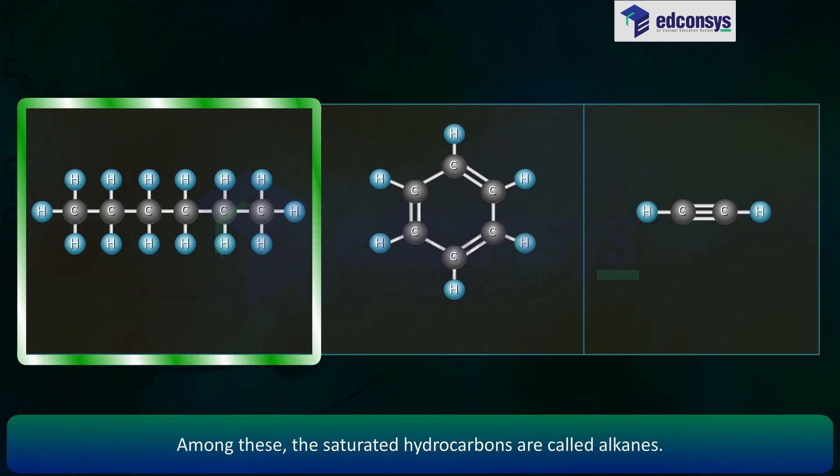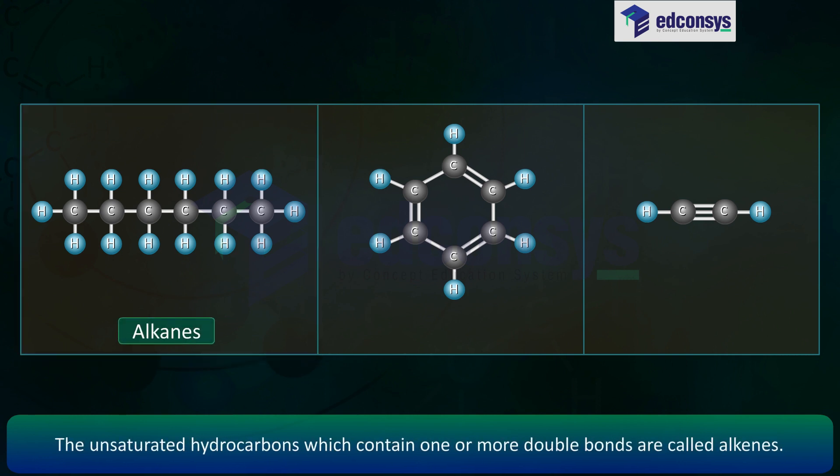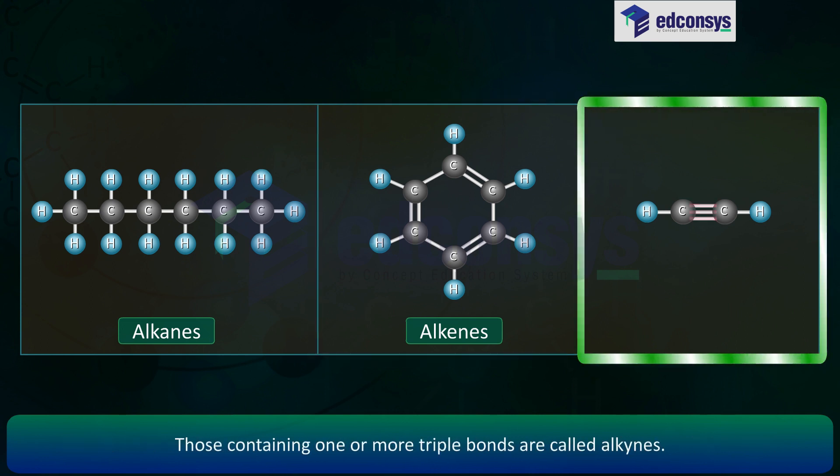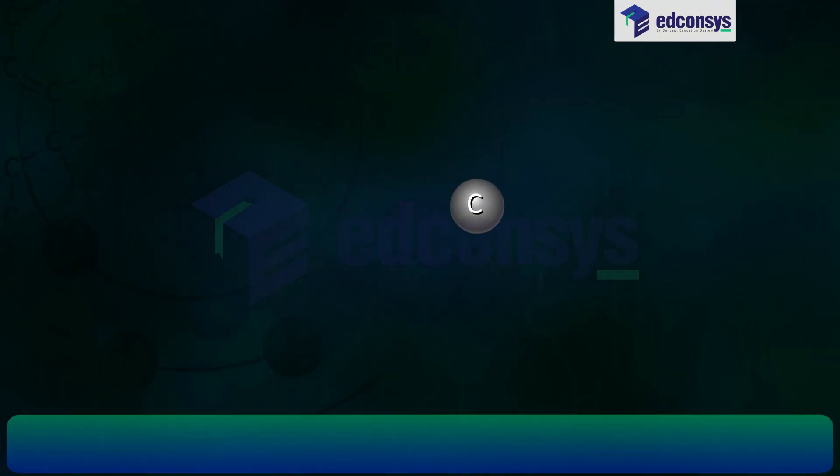Among these, the saturated hydrocarbons are called alkanes. The unsaturated hydrocarbons which contain one or more double bonds are called alkenes. Those containing one or more triple bonds are called alkynes.